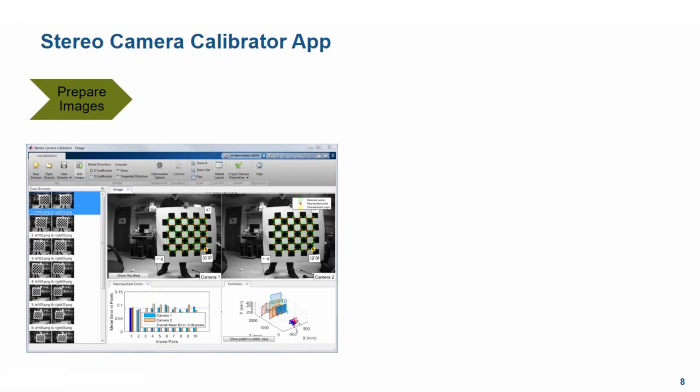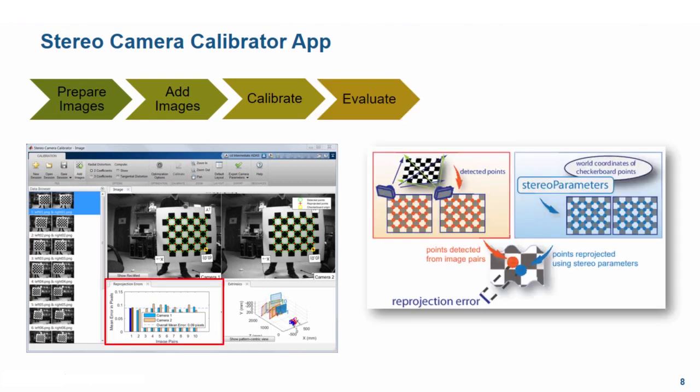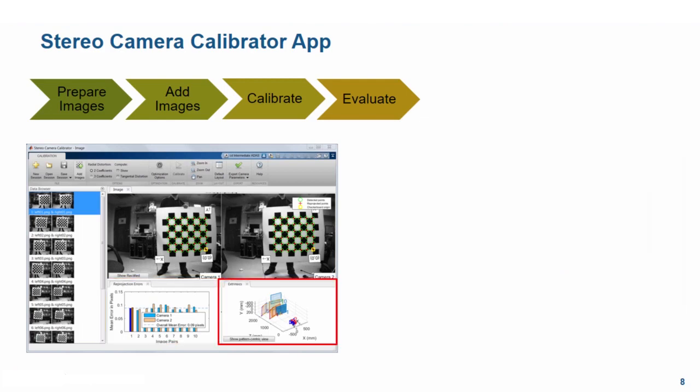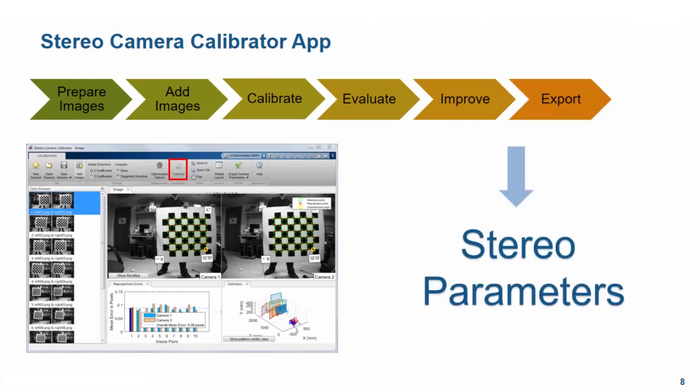Once we have captured images of the checkerboard pattern, we add them to the Stereo Calibrator app. The app calibrates the stereo parameters and we can evaluate results by looking at the reprojection errors — the distances in pixels between detected and reprojected points. Reprojection errors of less than 1 pixel are acceptable. We can also look at the 3D extrinsic parameters plot which provides a camera-centric view of the patterns. We can remove outlier images and recalibrate to improve results, then export the stereo parameters.